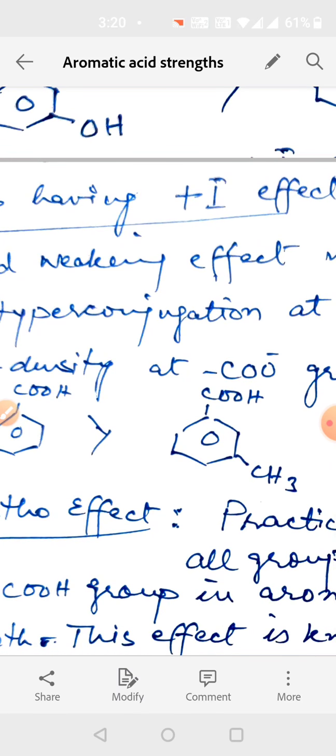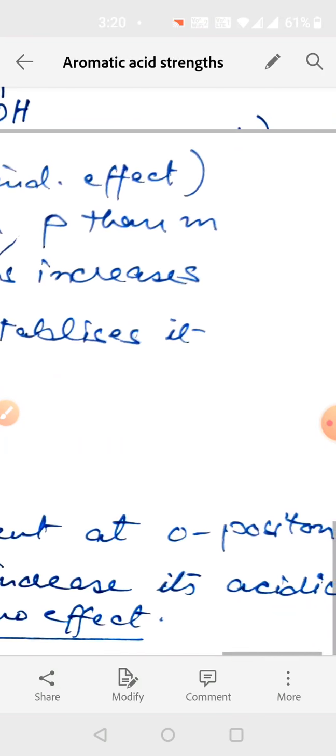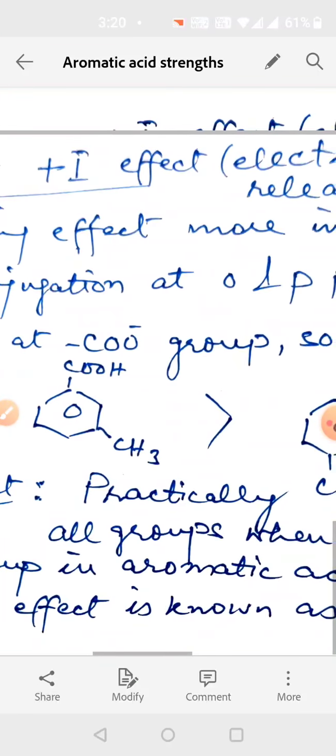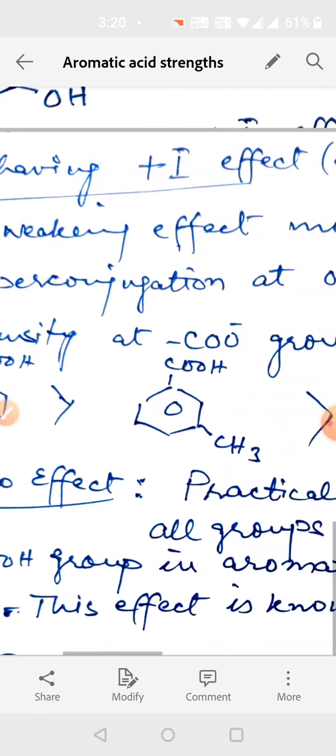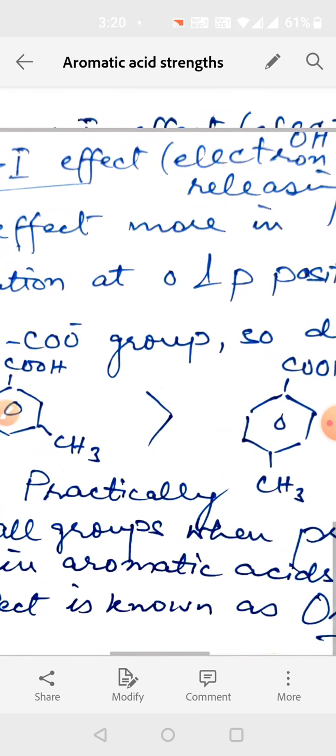Ortho effect is that practically all groups when present at ortho position to COOH group in aromatic acids increase its acidic strength. This effect is known as ortho effect. Any group, it may be CH3, it may be NO2, it may be Cl.